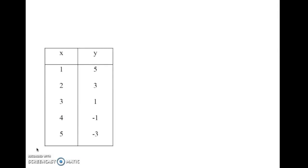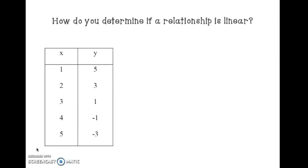Let's take a look at how you determine if a relationship is linear given a table. The first thing we want to do is look at the x and y values. Our x values are 1, 2, 3, 4, and 5. From 1 to 2, 2 to 3, 3 to 4, and 4 to 5 — x is increasing by 1.